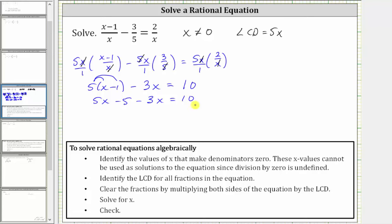Still simplifying the left side, we combine like terms. 5x minus 3x is 2x, giving us 2x minus 5 equals 10.